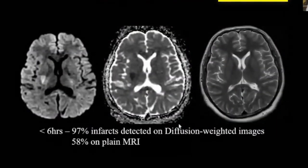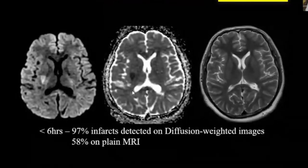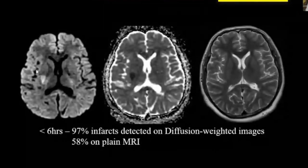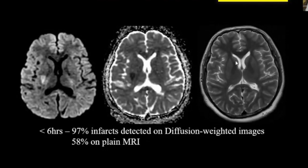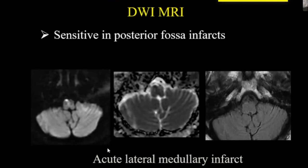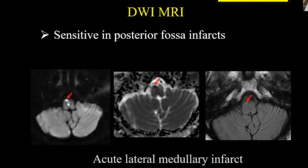Here is a real-time example of a patient admitted for acute myocardial ischemia who also developed focal neurological deficit and was scanned within about 35 minutes of ictus. You can see a small bright area of restricted diffusion in the right basal ganglia, which is not seen on T2 or FLAIR. Almost 97% of infarcts would be detected in the hyperacute stage on diffusion-weighted images, compared to 58% on plain MRI. Diffusion is also very sensitive for posterior fossa and lacunar infarcts — this is an actual example of lateral medullary hyperacute stroke involving the right half of the medulla, FLAIR negative.